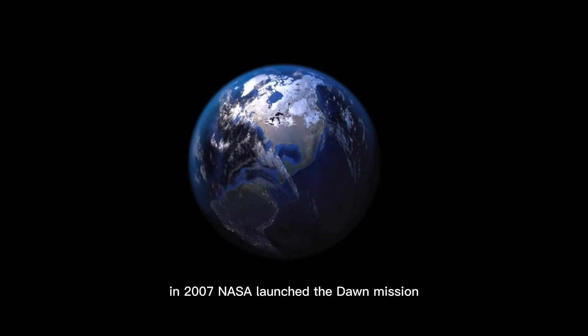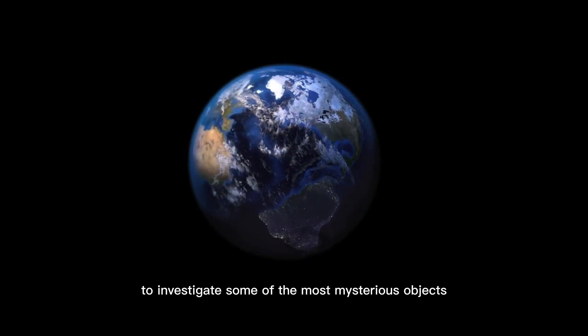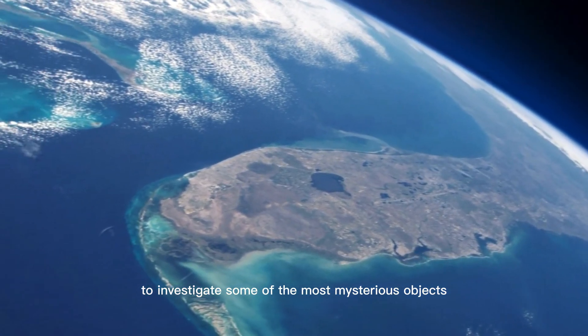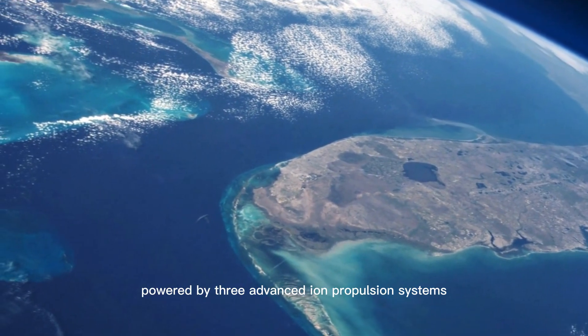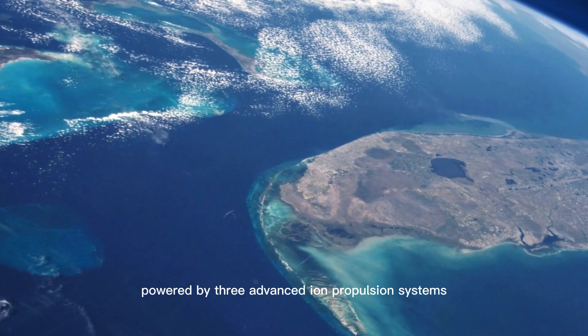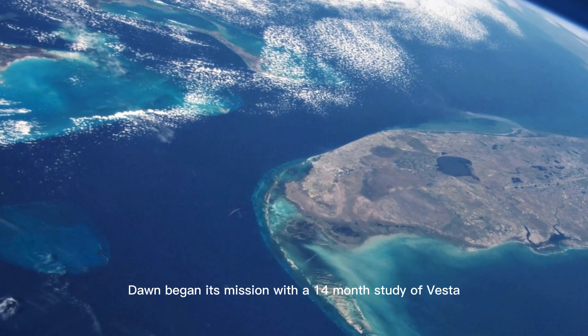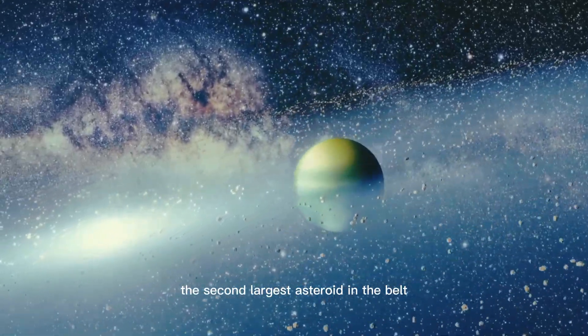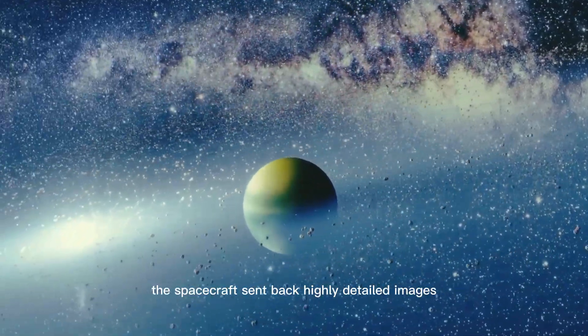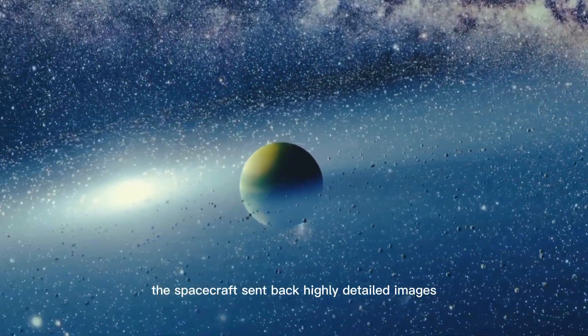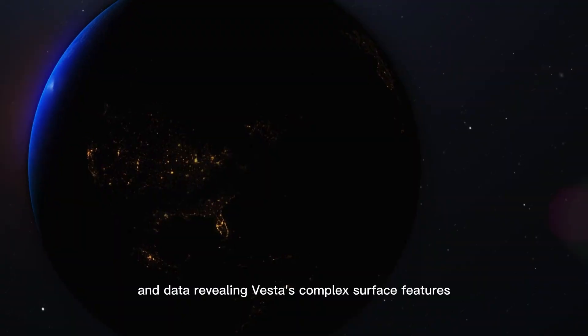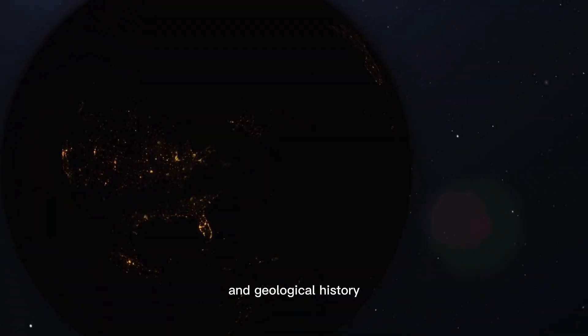In 2007, NASA launched the Dawn mission to investigate some of the most mysterious objects in our solar system. Powered by three advanced ion propulsion systems, Dawn began its mission with a 14-month study of Vesta, the second-largest asteroid in the belt. The spacecraft sent back highly detailed images and data, revealing Vesta's complex surface features and geological history.